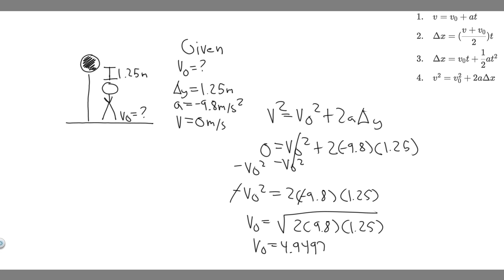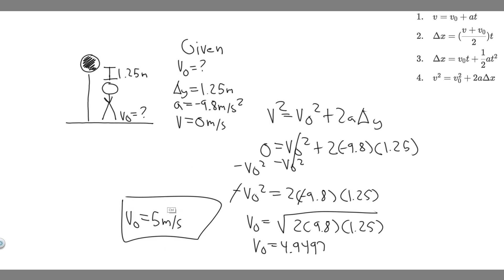Rounding to a whole number, the initial velocity is approximately 5 meters per second. So if the player wants to jump 1.25 meters to get the ball, he needs to leave the ground at 5 meters per second. That's the answer — hopefully you found this useful.